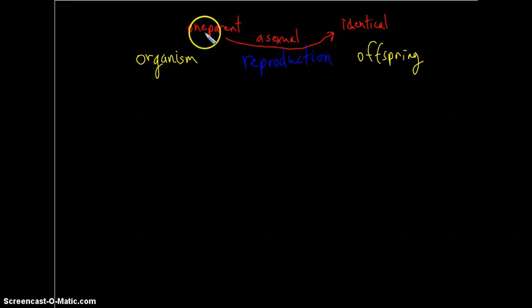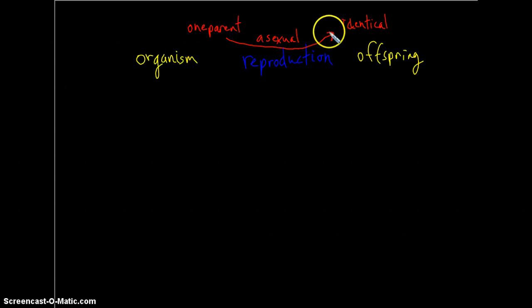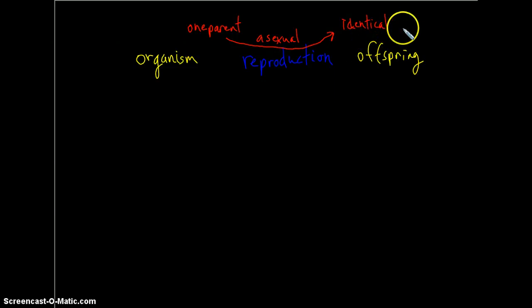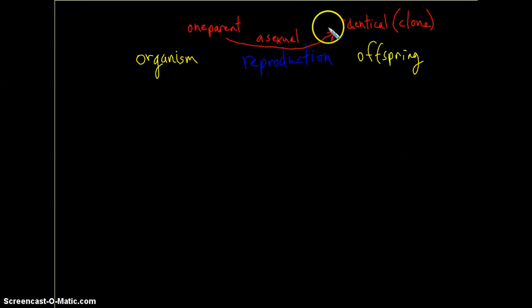So the hallmark of asexual reproduction is that one parent imparts its genetic information on a single offspring, or it could be multiple offspring, but a genetically identical offspring that is referred to as a clone.